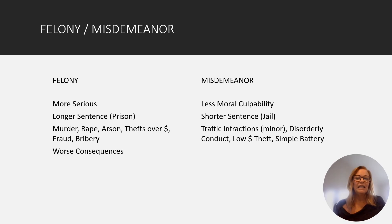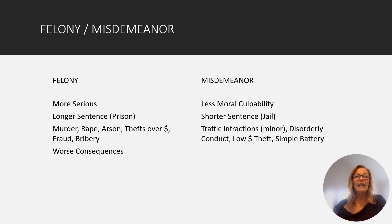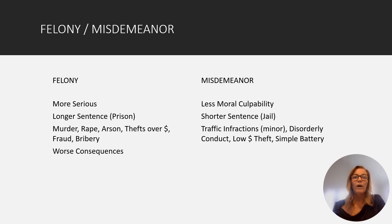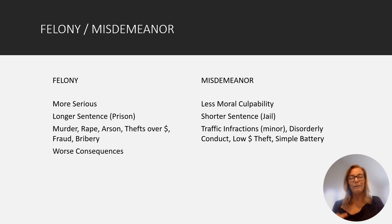Let's talk about the difference between a felony and a misdemeanor. A felony is going to be a more serious crime. You're going to have a longer sentence, and it's going to be in prison if you go — a year or more. Murder, rape, arson, certain thefts, embezzlements, fraud, briberies — those are all going to be felonies and they have worse consequences because they're worse types of crimes. There are some felonies that you go to jail for repeat DUI and things of that nature.